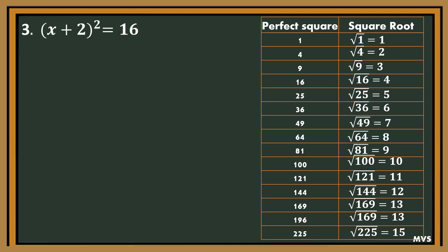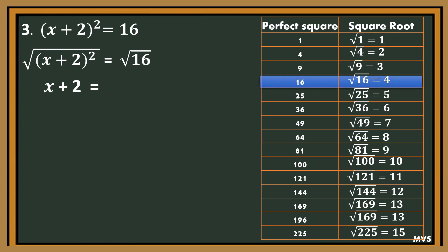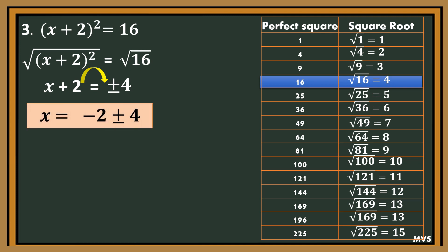Example 3: The square of (x plus 2) equals 16. First, get the square root of both sides. We will have the square root of quantity (x plus 2) squared equals the square root of 16. The square root of quantity (x plus 2) squared is x plus 2. Since 16 is a perfect square, use the table at the right side — the square root of 16 is 4. So we have x plus 2 equals plus or minus 4. Then, transpose positive 2 to the right side; it will become negative 2. Therefore, x is equal to negative 2 plus or minus 4.